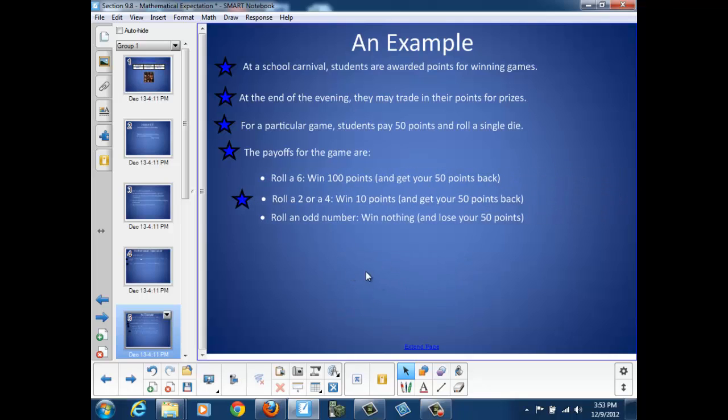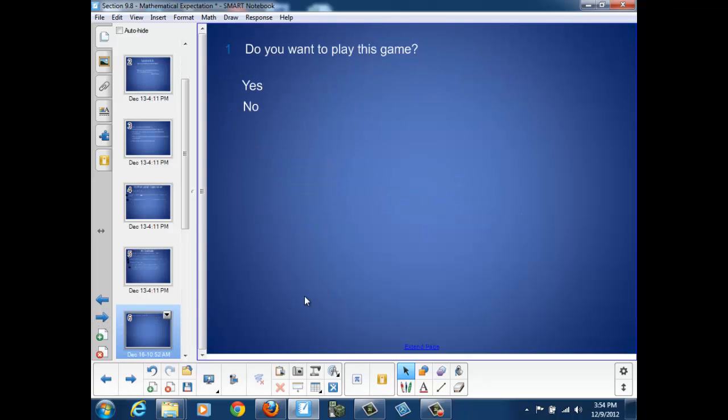The payoffs for the game are as follows. If the student rolls a 6, the student wins 100 points and gets their original 50 points back. If the student rolls a 2 or a 4, they win 10 points and get their 50 points back. If the student rolls an odd number, 1, 3, or 5, they win nothing and lose their 50 points. So the question to you is, do you want to play this game?